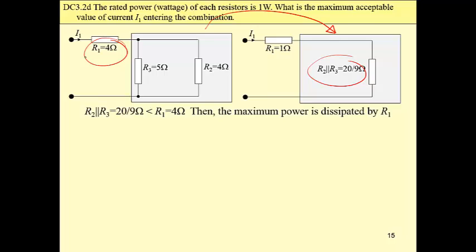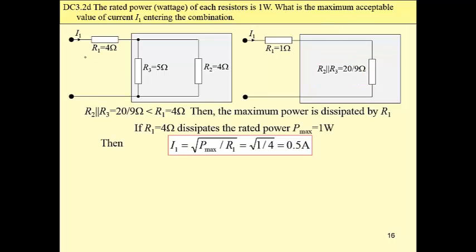And then if we assume that R sub 1 dissipates the rated power, we may find the answer to our problem, current, the maximum acceptable value of current entering the combination. And that way we have completed this exemplary problem.